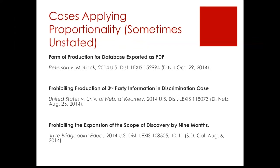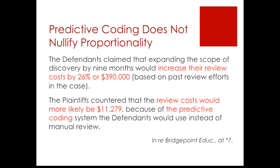Let's talk about cases where proportionality was applied. We have form of production for a database exported as PDFs — it was a unique database and its export feature was as PDFs, so proportionality sided with production as a PDF. Another case prohibited production of third-party information in a discrimination case out of Nebraska. And there was a case prohibiting expansion of the scope of discovery by nine months. One party claimed that predictive coding could be used by the producing party effectively, which would nullify the proportionality argument.